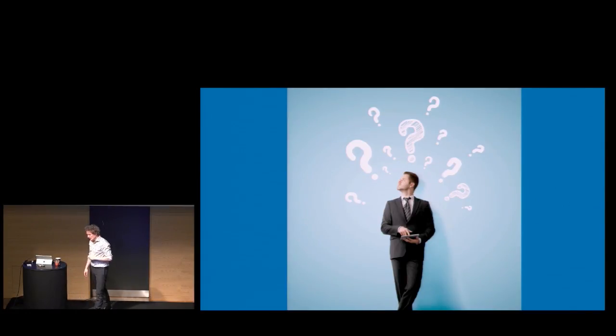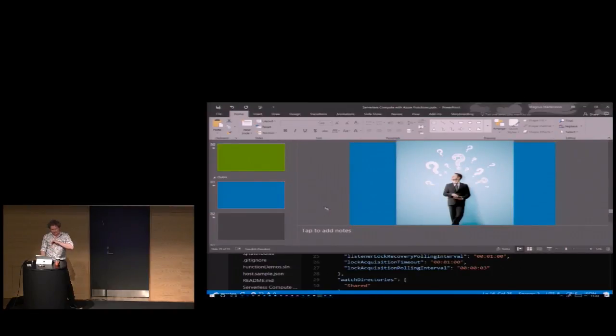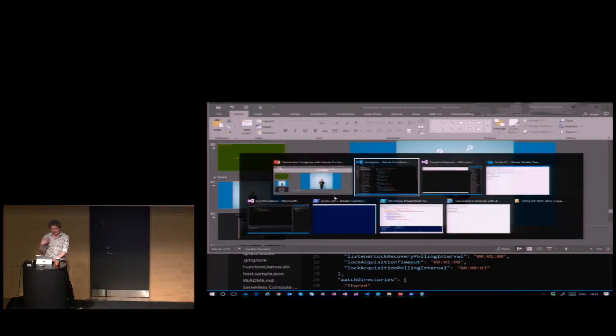On scaling: it's basically automatically scaled if you run the dynamic plan. You can tweak it a little bit. Typically it should dynamically scale to meet your needs — if a lot of people are calling your code, you should get more compute power automatically.